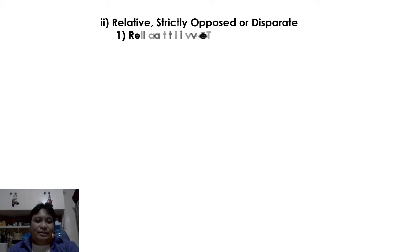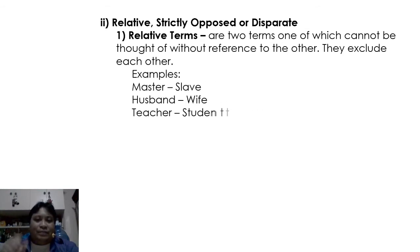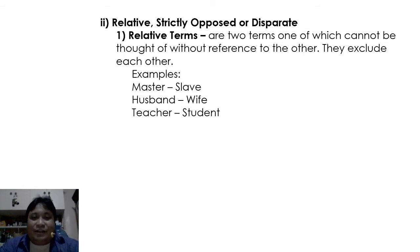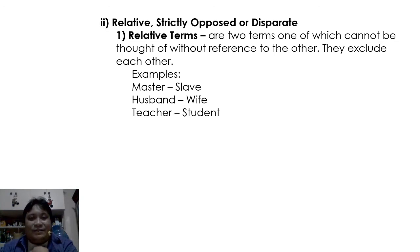Connected terms could also be relative, strictly opposed, or disparate. Relative terms are two terms where one cannot be thought of without reference to the other. For example: master and slave — you cannot be called a master without a slave. Husband and wife, teacher and student, employee and employer — these are all relative terms.